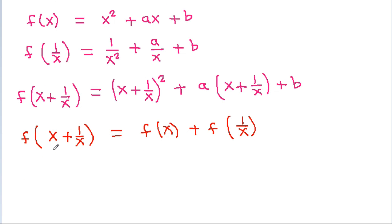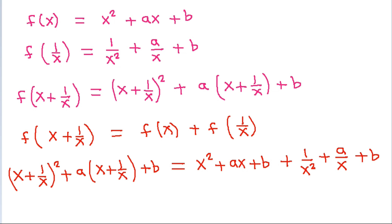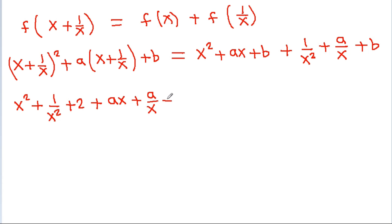So f(x + 1/x) is (x + 1/x) squared plus a times (x + 1/x) plus b, and this is equal to f(x) plus f(1/x), which gives us x squared plus ax plus b plus 1/x squared plus a/x plus b.